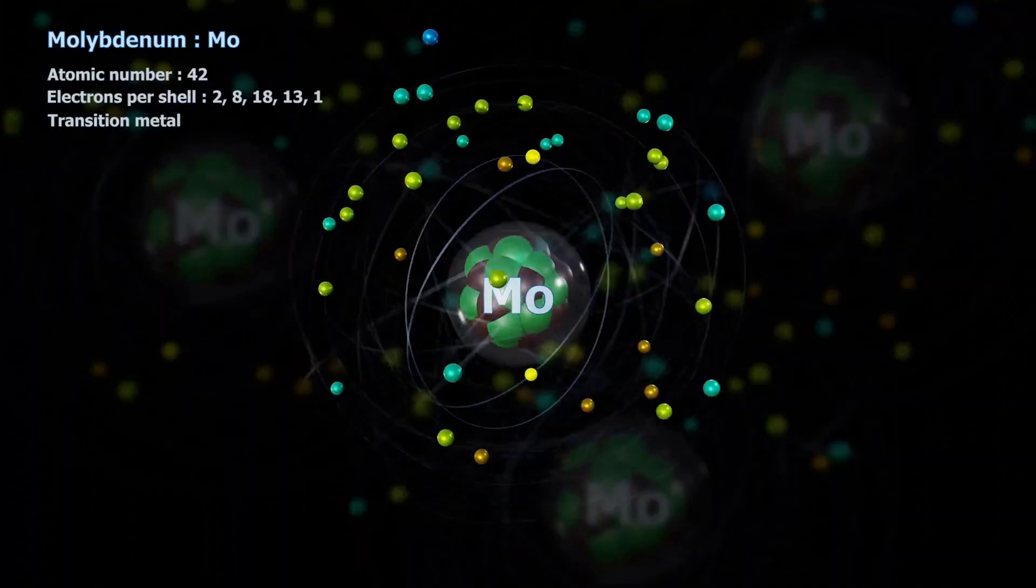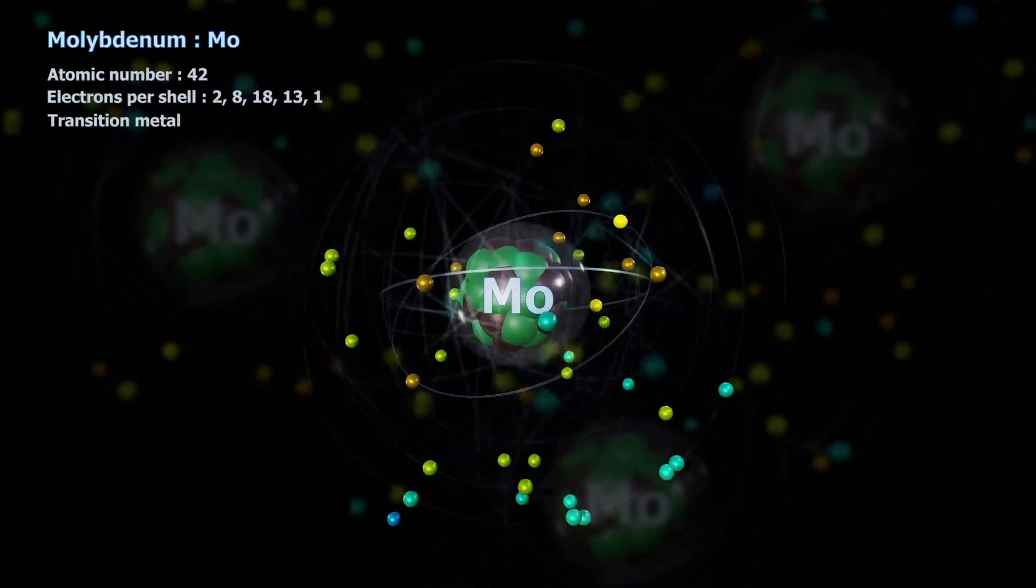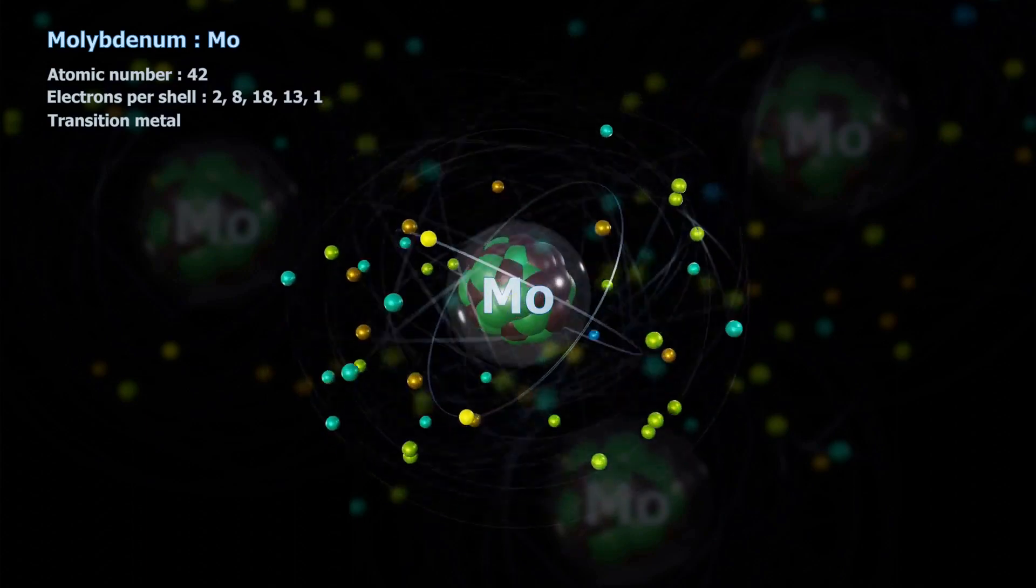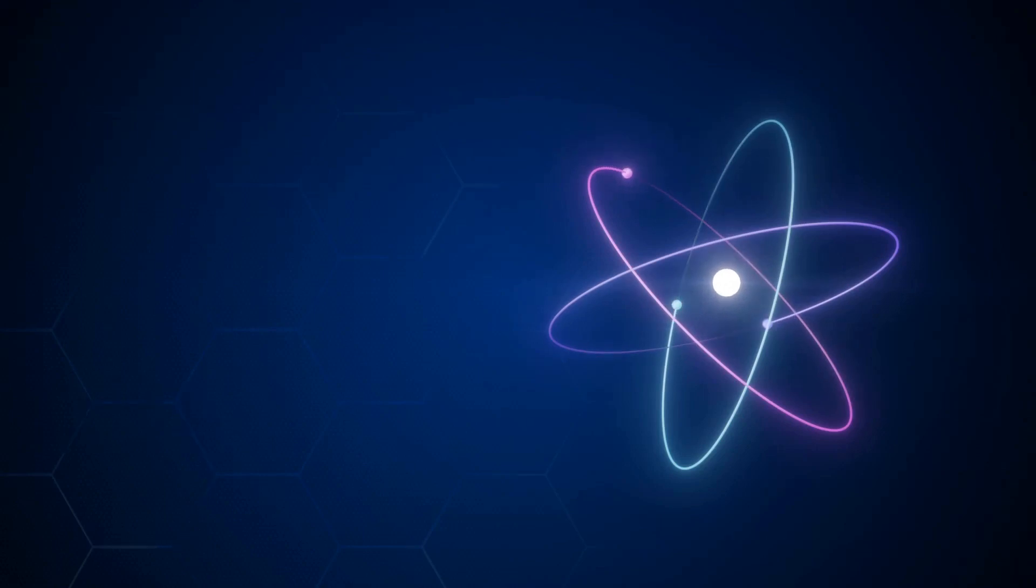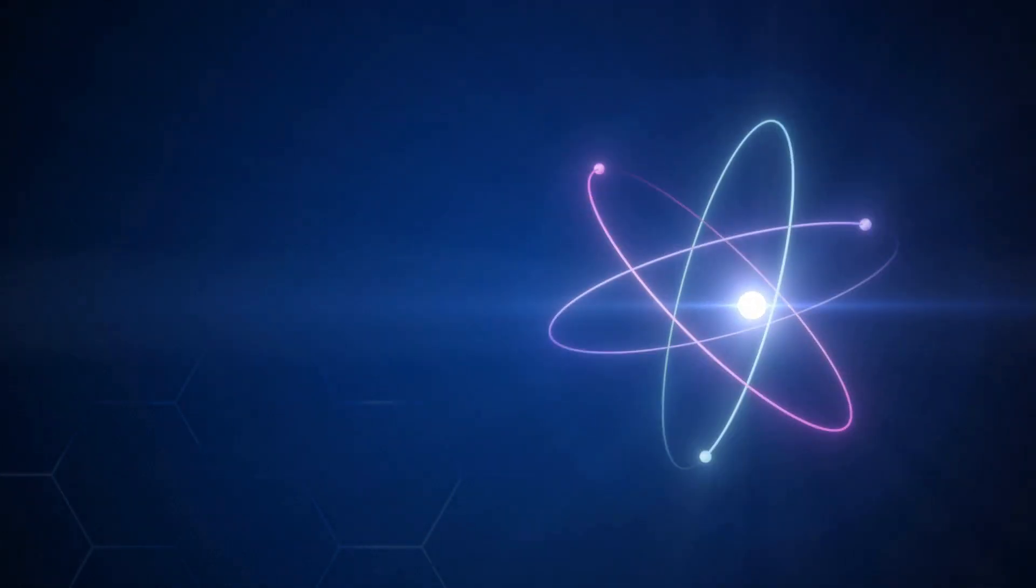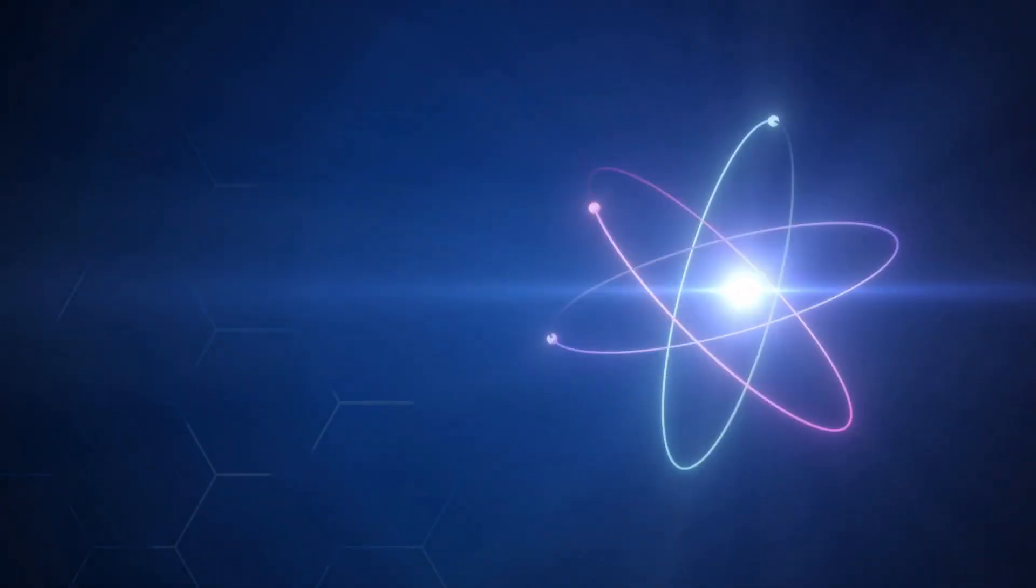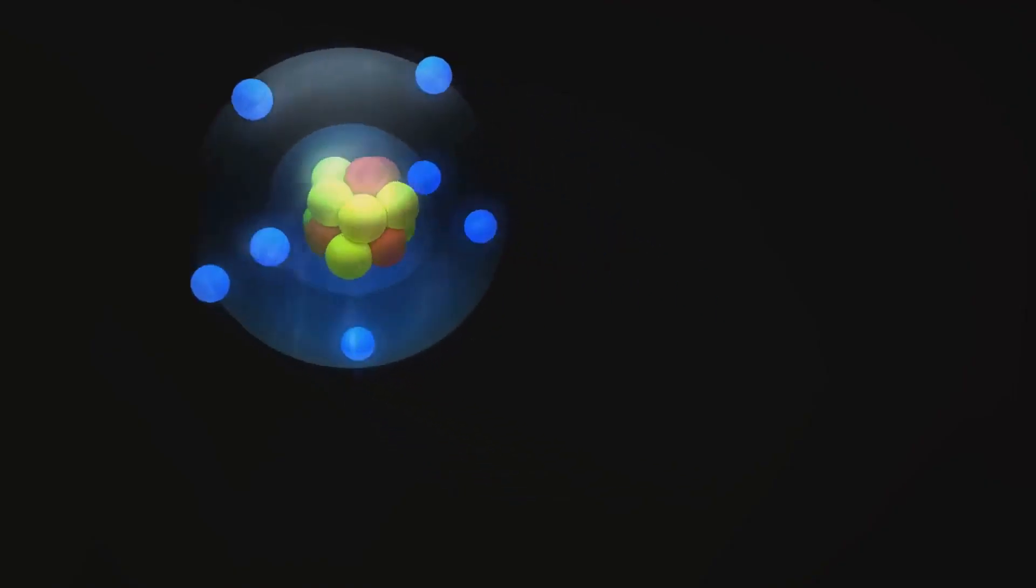This unexpected wobble we've discovered in muons, these cousins of electrons but with a bit more heft, throws a spanner in the works of our current understanding of physics. You see, we have this thing called the standard model. It's a theory that describes the fundamental forces and particles in our universe. It's our rulebook, our guide to how things are supposed to behave at the most basic level.